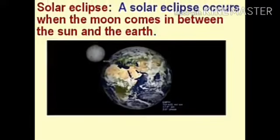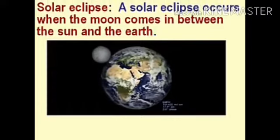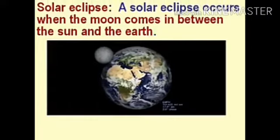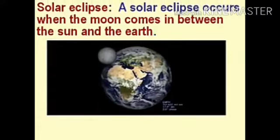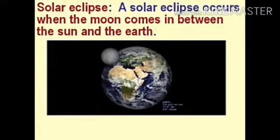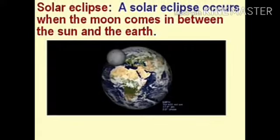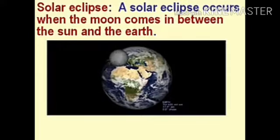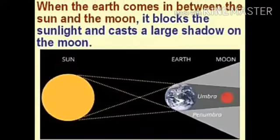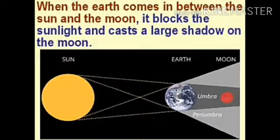First, let's see the solar eclipse. A solar eclipse occurs when the moon comes in between the sun and the Earth. Next is the lunar eclipse — a lunar eclipse occurs when the Earth comes in between the sun and the moon.